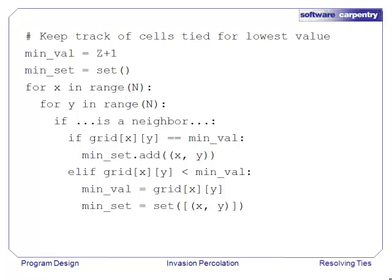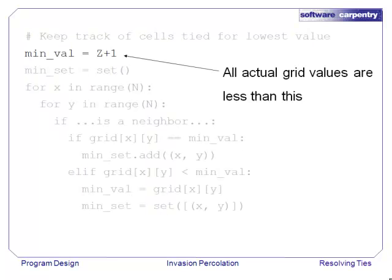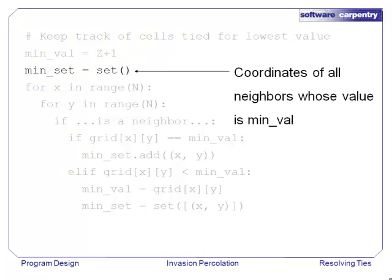Here's the code that implements that. We'll step through it line by line. We start off by setting minval equal to one greater than the range of random values that could legally appear in the grid. This way we know that the very first cell we look at will have a value less than the minimum we've seen so far.